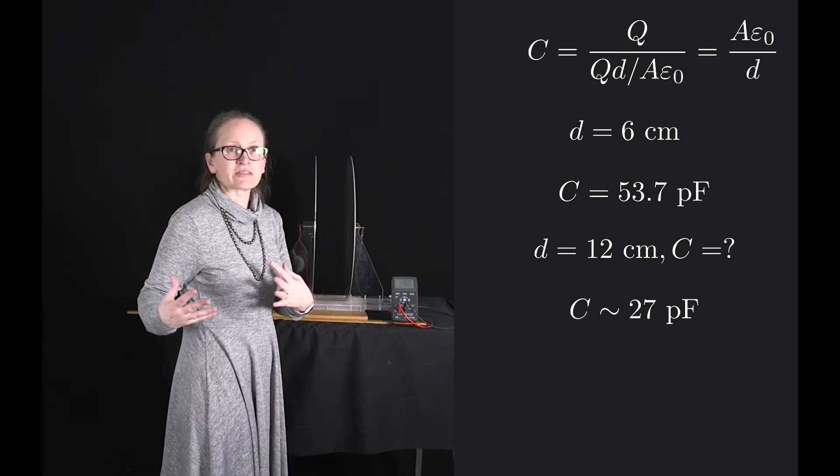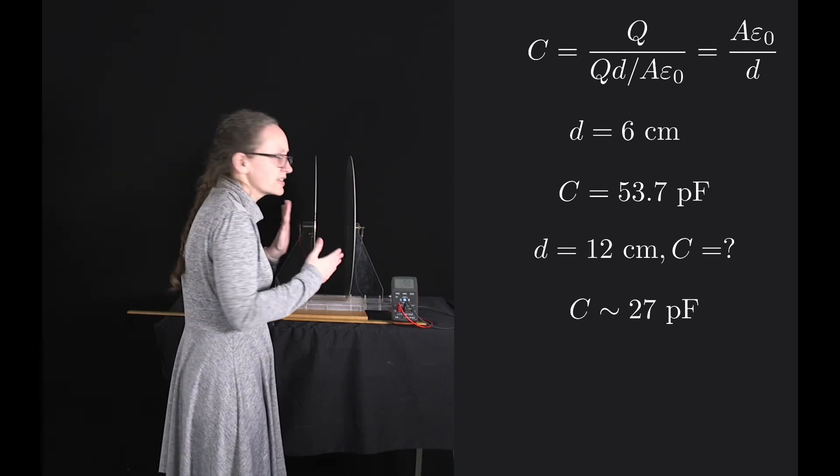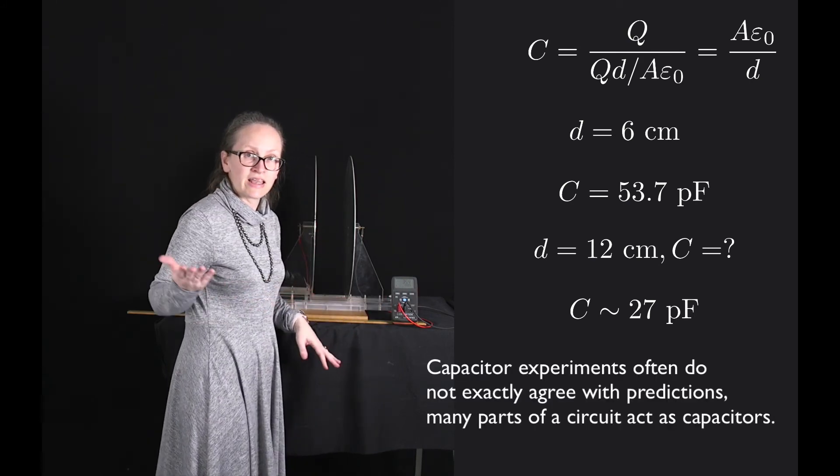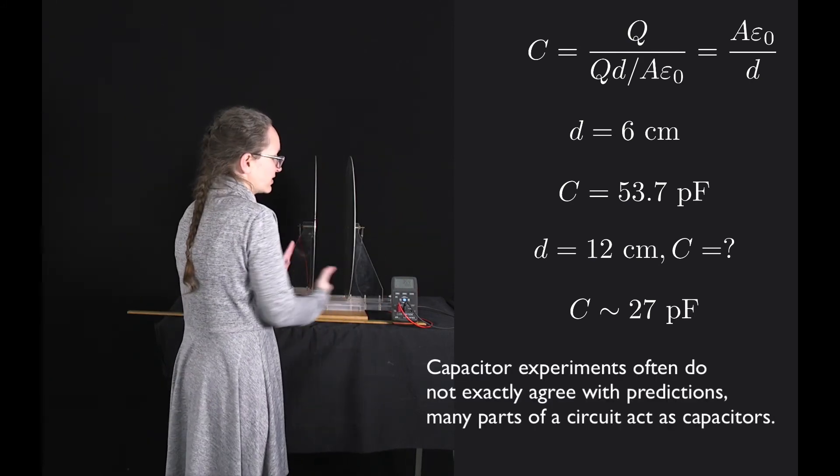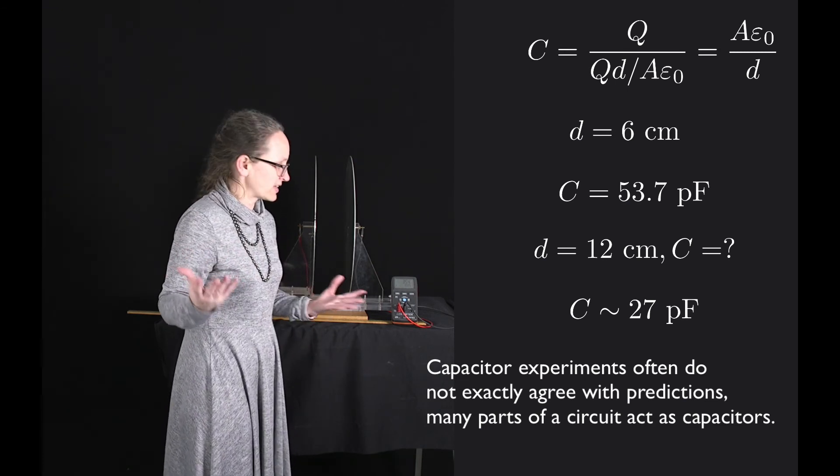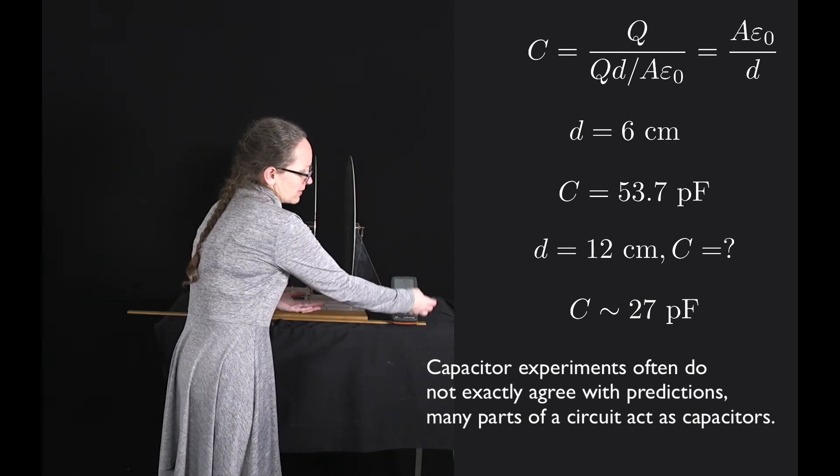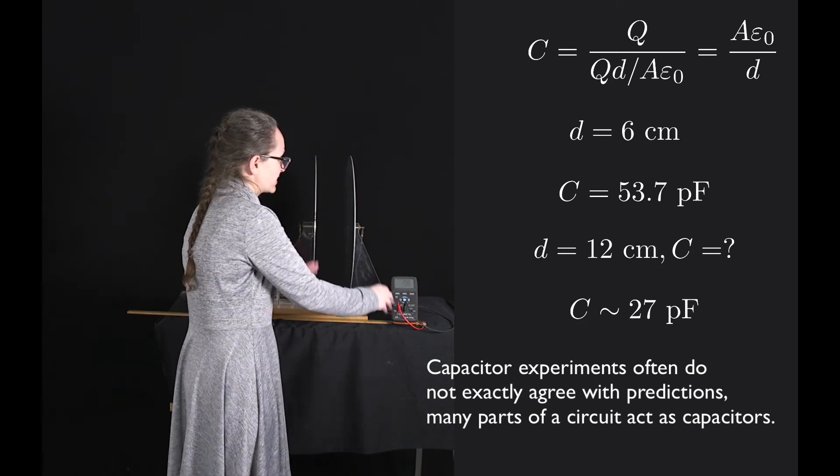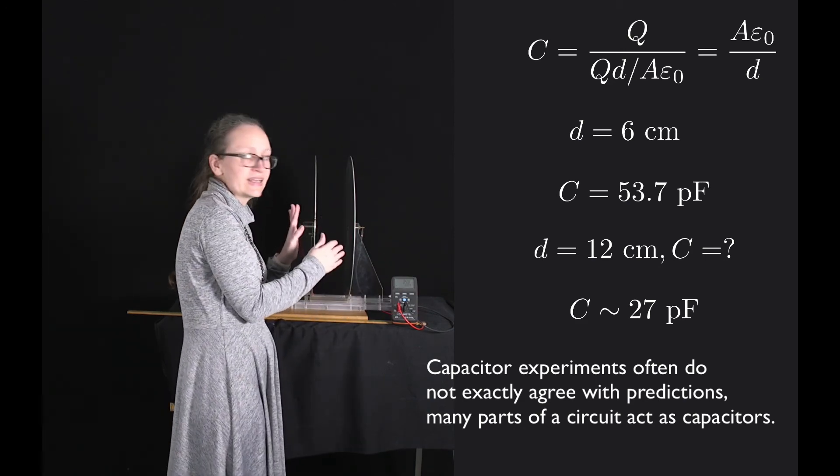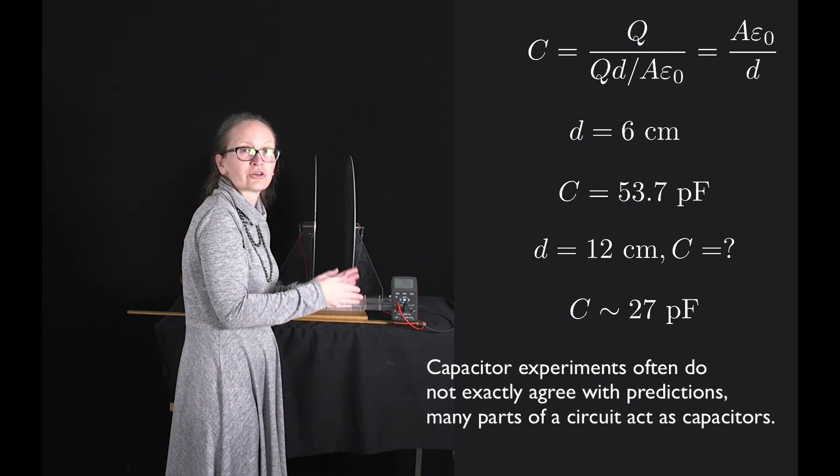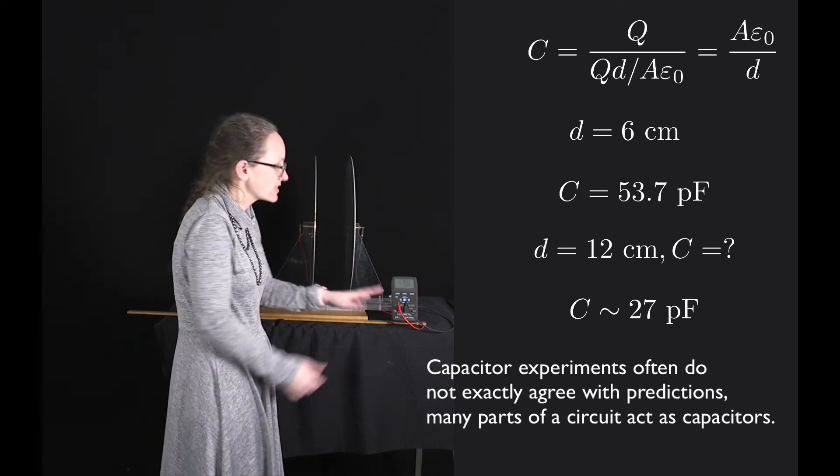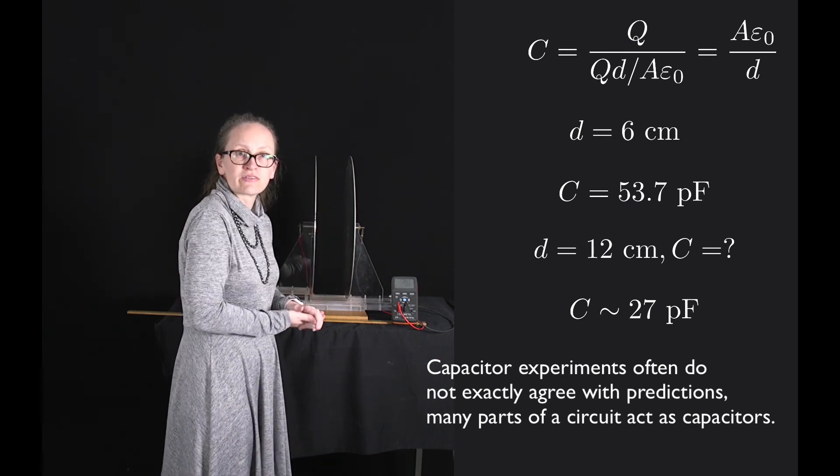Capacitors can be a bit tricky because many things in a circuit and around the capacitors can actually act as capacitors. For example, these cords which are connecting the capacitance meter to the capacitor plates have the ability to store charge, and so also act as small capacitors changing the capacitance of the system.